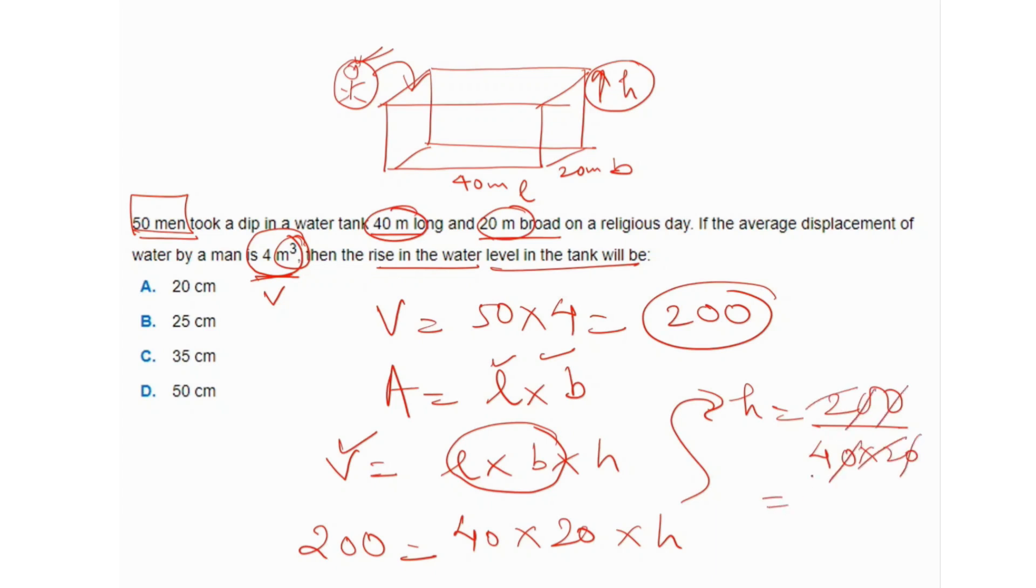Since everything is in meters, this is 1/4 meter. We can convert this to centimeters because the answer choices are in centimeters. So 1/4 × 100, since 1 meter equals 100 centimeters, gives us 25 centimeters. B is the correct answer.